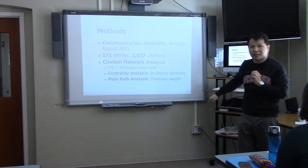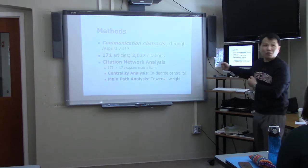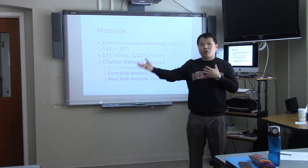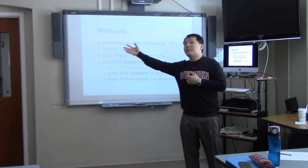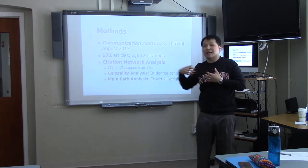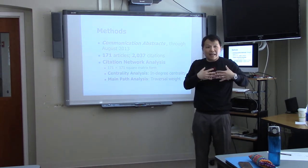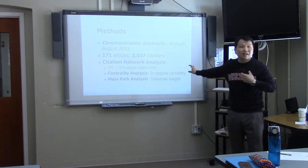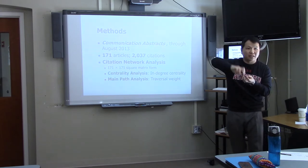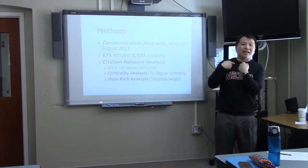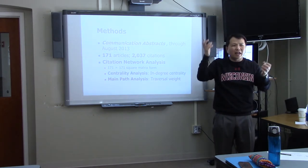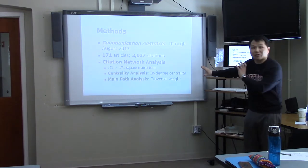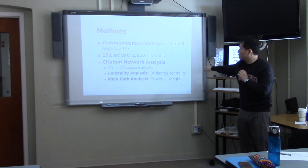Main-path analysis can redress two limitations of in-degree centrality. First, if C.J. cites Scheufele, and Scheufele cites Broussard, but C.J. does not cite Broussard directly, C.J. is still indirectly related to Broussard. In-degree centrality cannot capture those indirect linkages. Second, newer articles cannot cite older ones, creating temporal bias — older articles tend to accumulate more citations. Main-path analysis addresses this by dividing the number of times an article appears on a linking path by the total possible linkages.